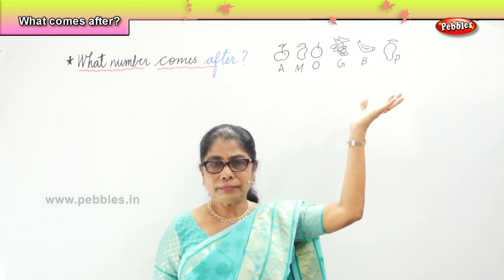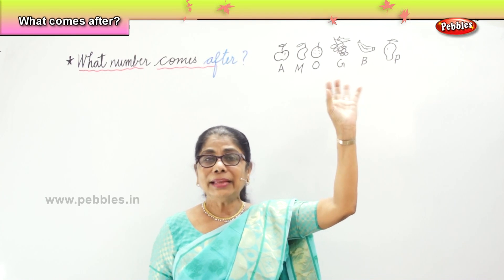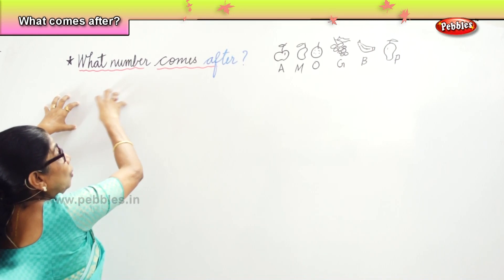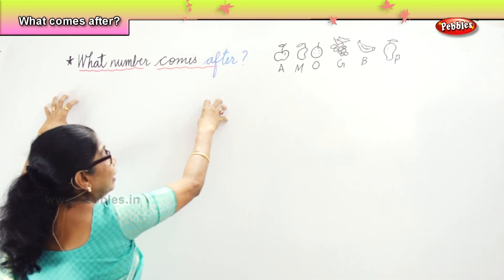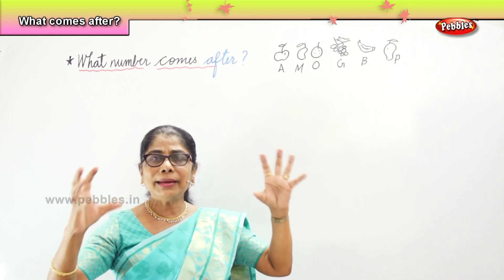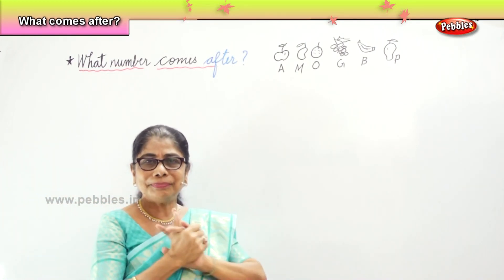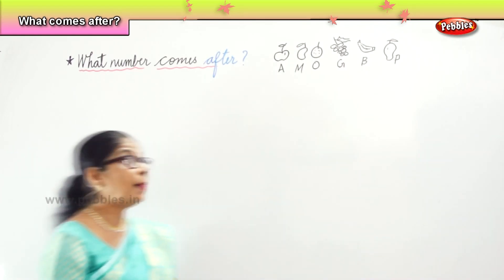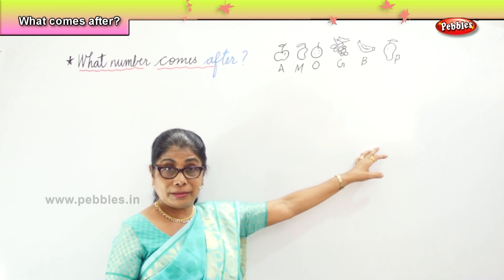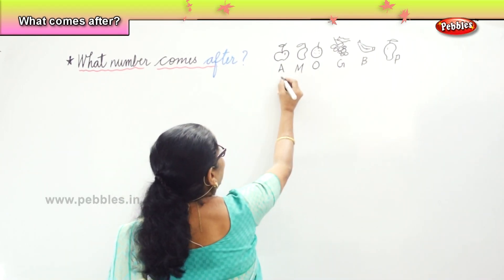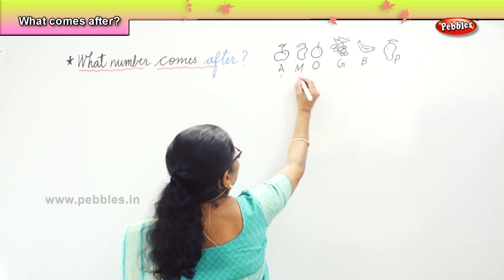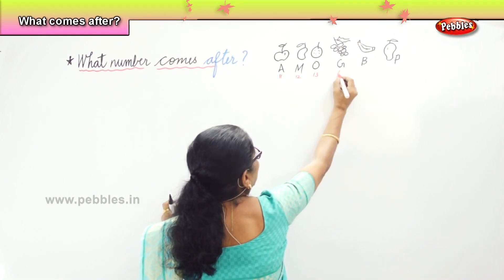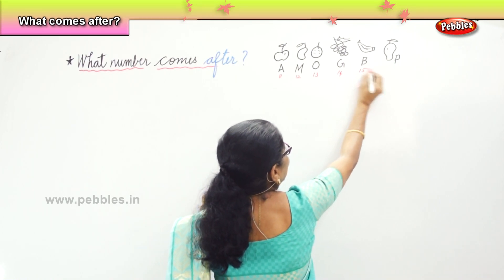Okay, so we are going to learn to count the numerals and write down what is the number that comes after. Now, let's do some exercise to remember what number comes after. Here, if I write 1, 2 — 11, 12, 13, 14, 15, 16.